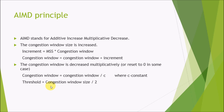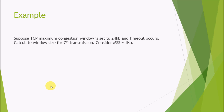So we can control the window size, or the growth of the window size, in order to prevent congestion — it is a precaution for congestion. Now we will look at an example. Suppose for TCP, the maximum congestion window size is set to 24 KB, and a timeout occurs. Calculate the window size at the 7th transmission, where MSS is given as 1 KB.